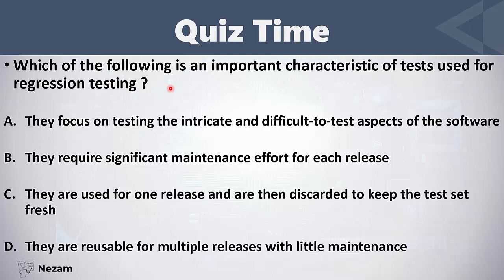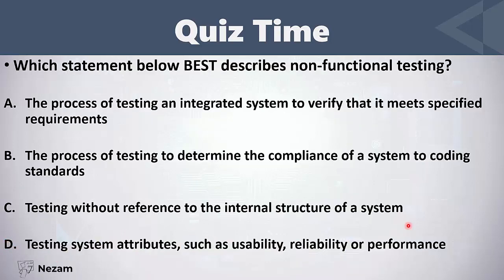Which of the following is an important characteristic of tests used for regression testing? The tests used in regression testing — the regression test suites — should be stable and evolve slowly throughout the life cycle. That's what makes them a strong candidate for automation. So the correct answer is: they are reusable for multiple releases with little maintenance.